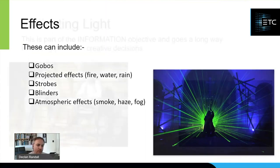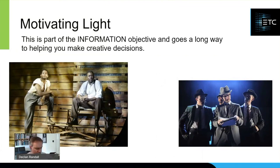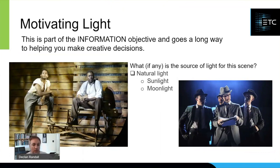One of the things I think about when planning the design is what I call motivating light — what is the light source shedding light on this scene? That really is your information objective. When going through the script, you're asking yourself: what, if any, is the light source of the scene? Is it natural light? Is it artificial light? What are you actually trying to convince the audience is lighting the scene? And you make your choices based on that.